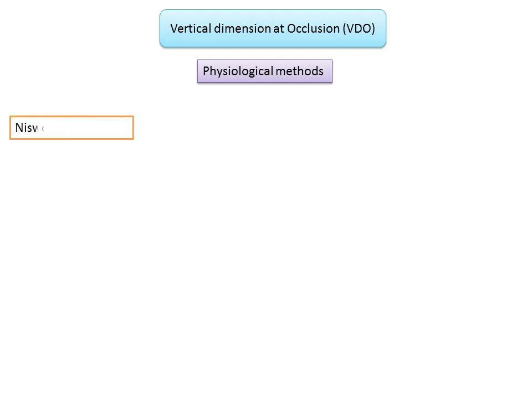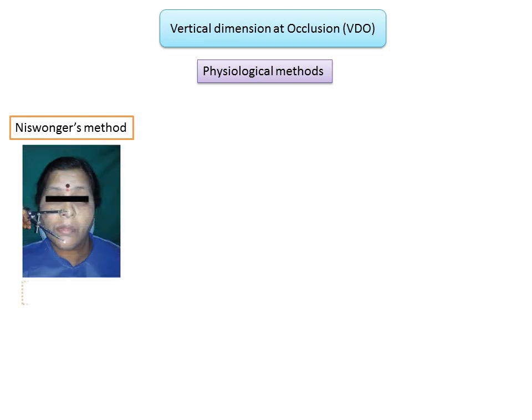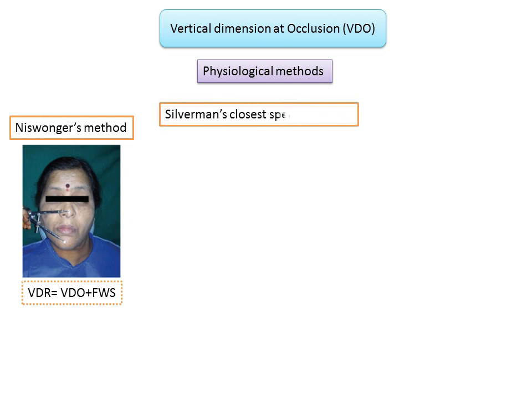Another physiological method is Niswonger and Thompson's method (1934). The patient sits upright with the head unsupported and eyes looking straight ahead. When relaxation is obvious, the lips are carefully parted to reveal the freeway space present between the occlusal rims. The formula VDR = VDO + freeway space can then be used to evaluate the vertical dimension at occlusion.